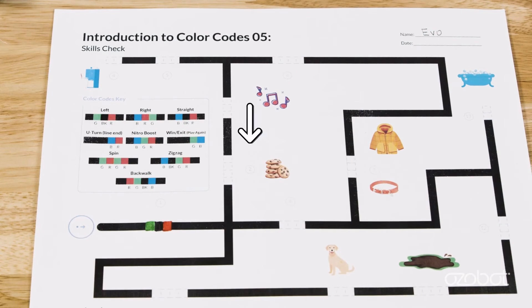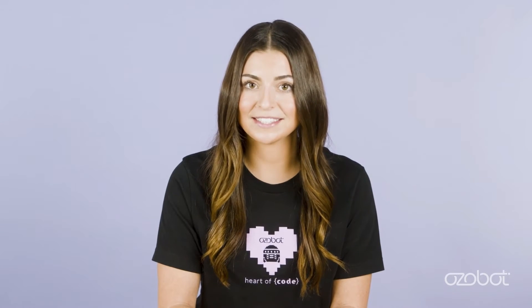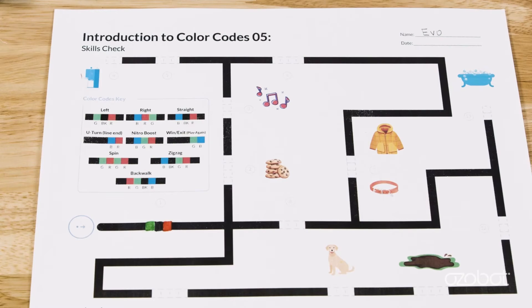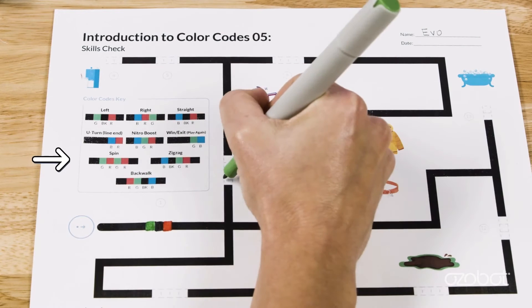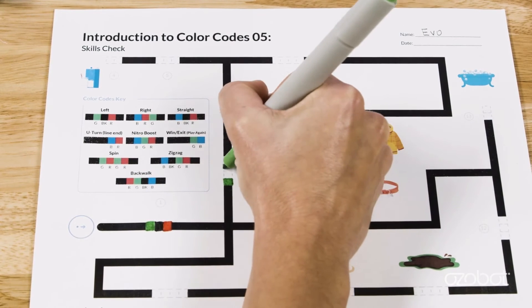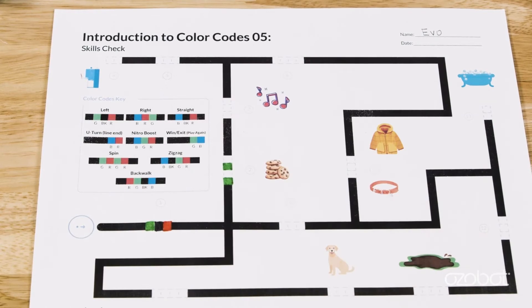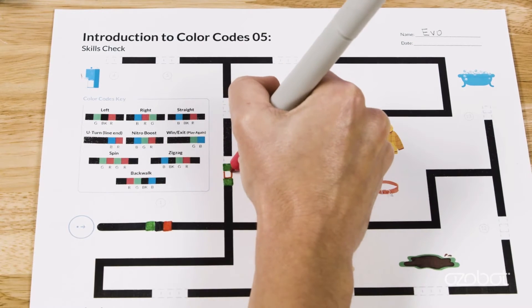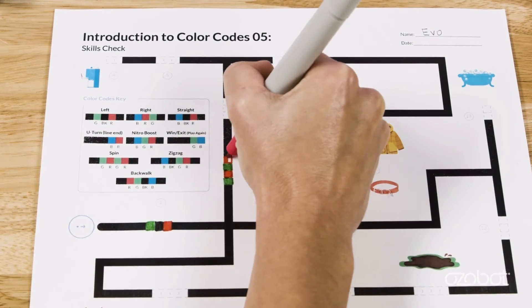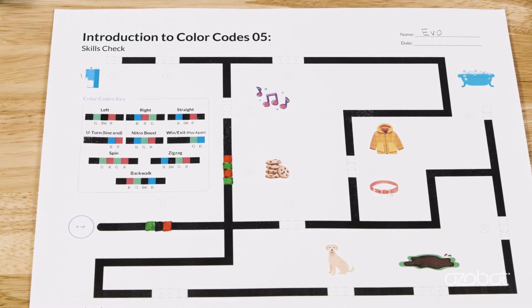Add the left at intersection color code from the color codes key for the first missing color code. The second missing color code has four colors, so it must be a special move. Ozobot gobbled down the cookies. What special move in the color codes key could be used to show Ozobot gobbling down cookies? Maybe the spin color code. Add the spin color code for the second missing code. Use your color code markers to add the left at intersection color code for number one and the spin color code for number two.